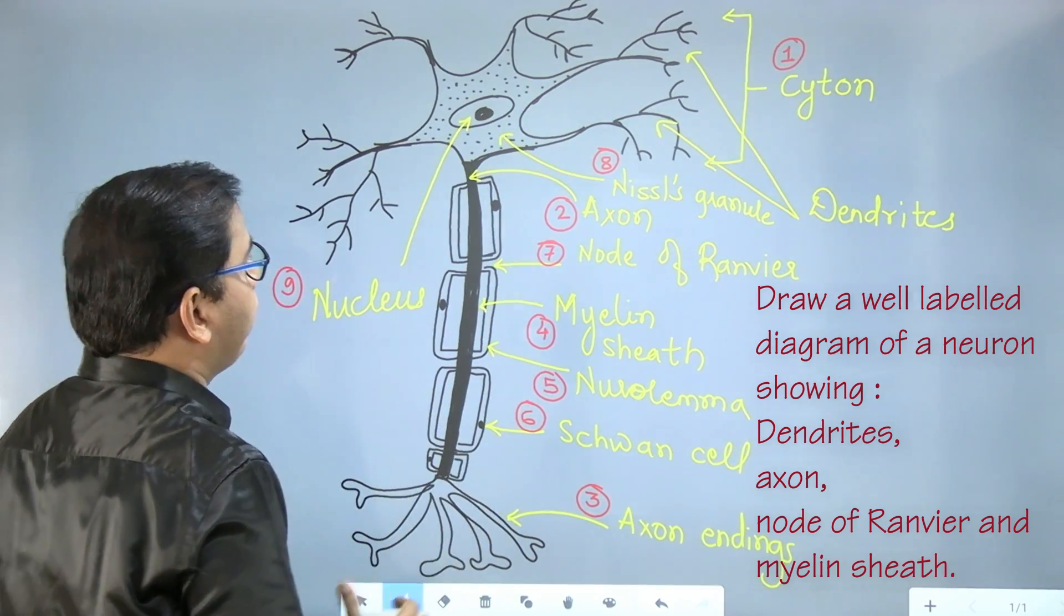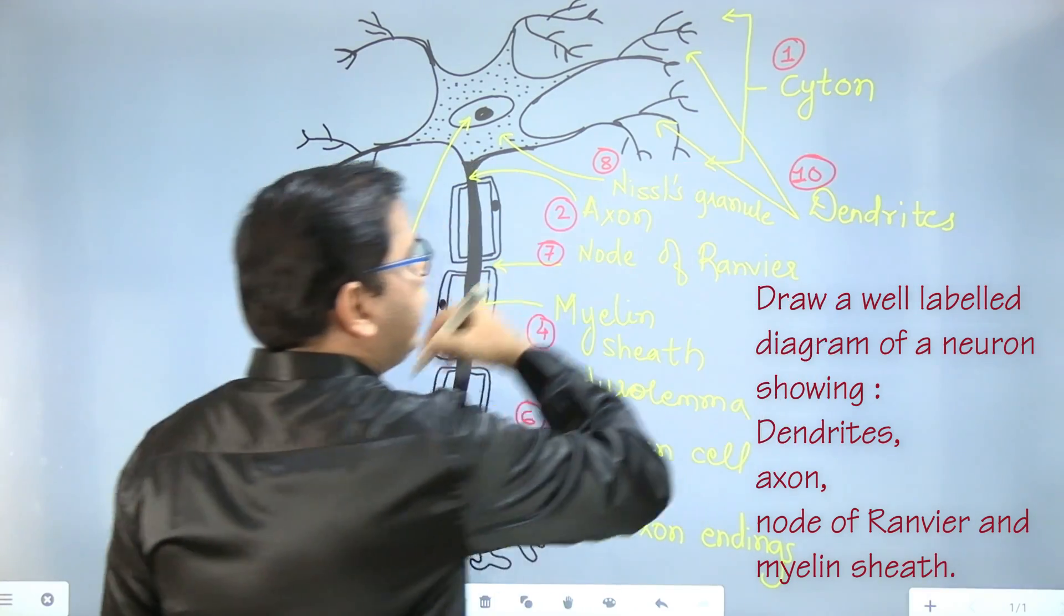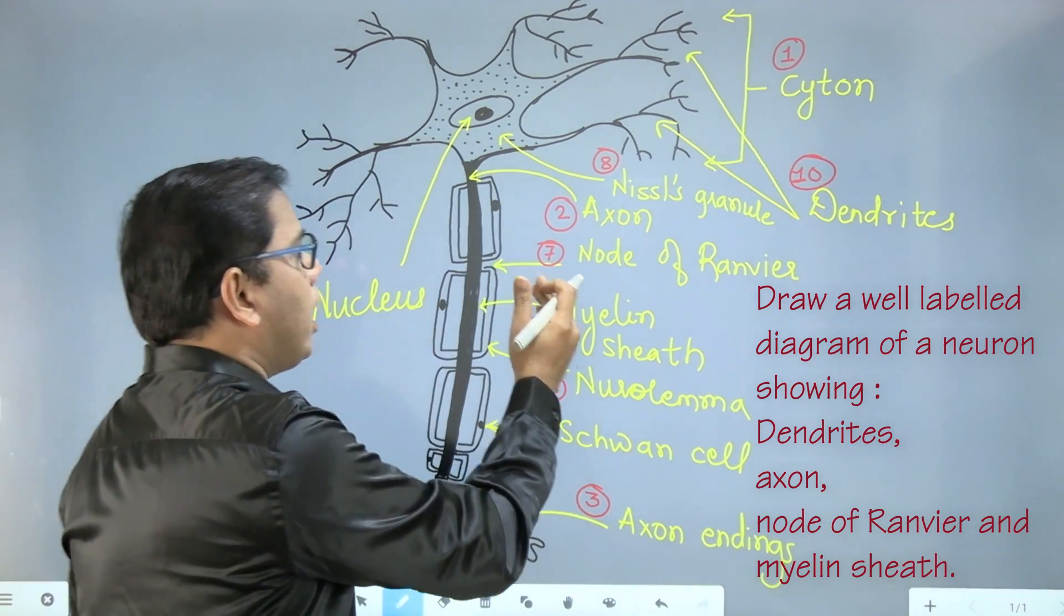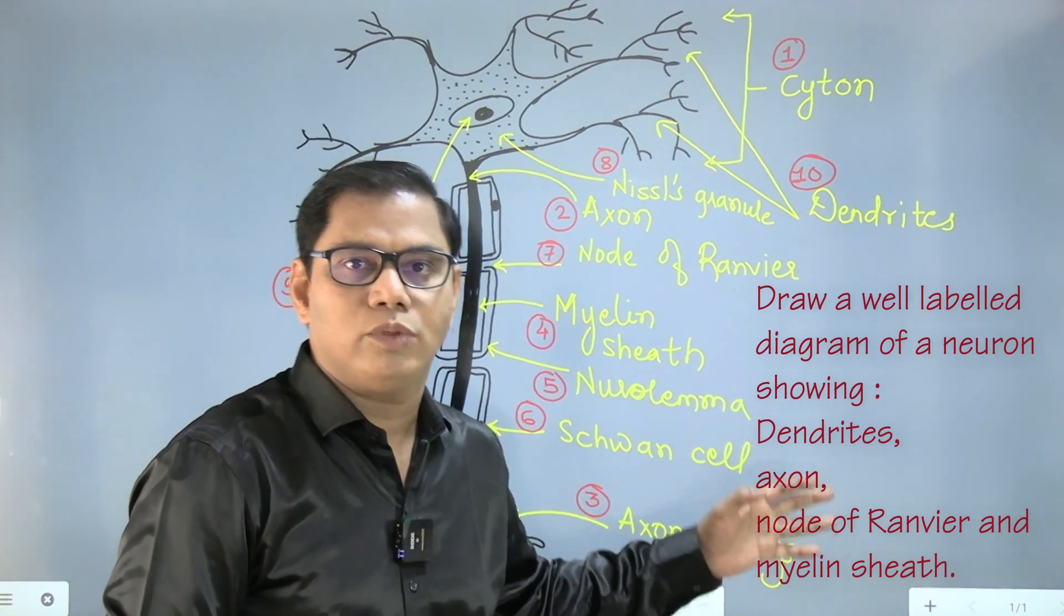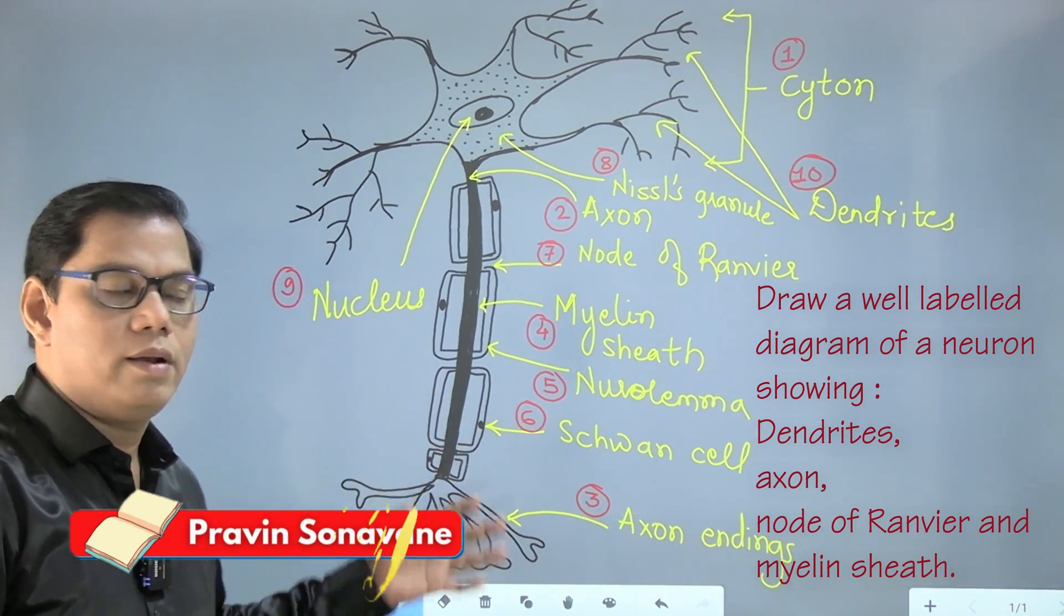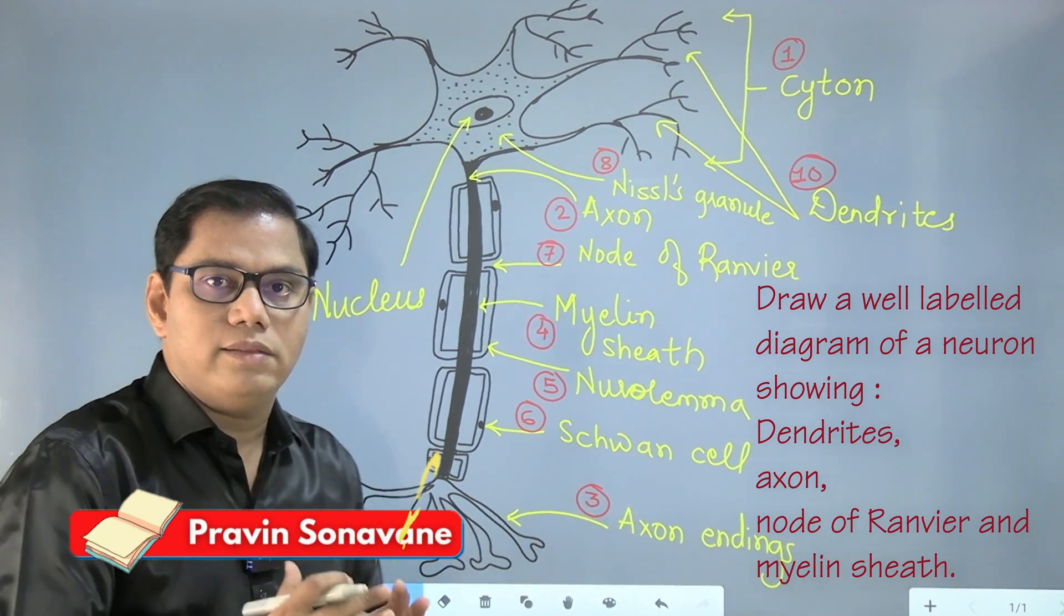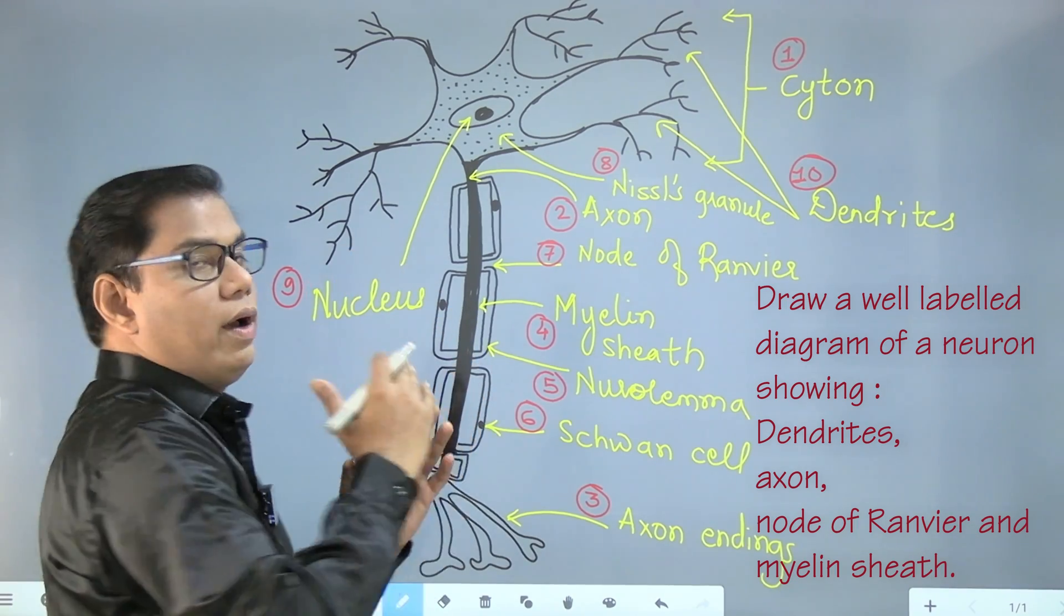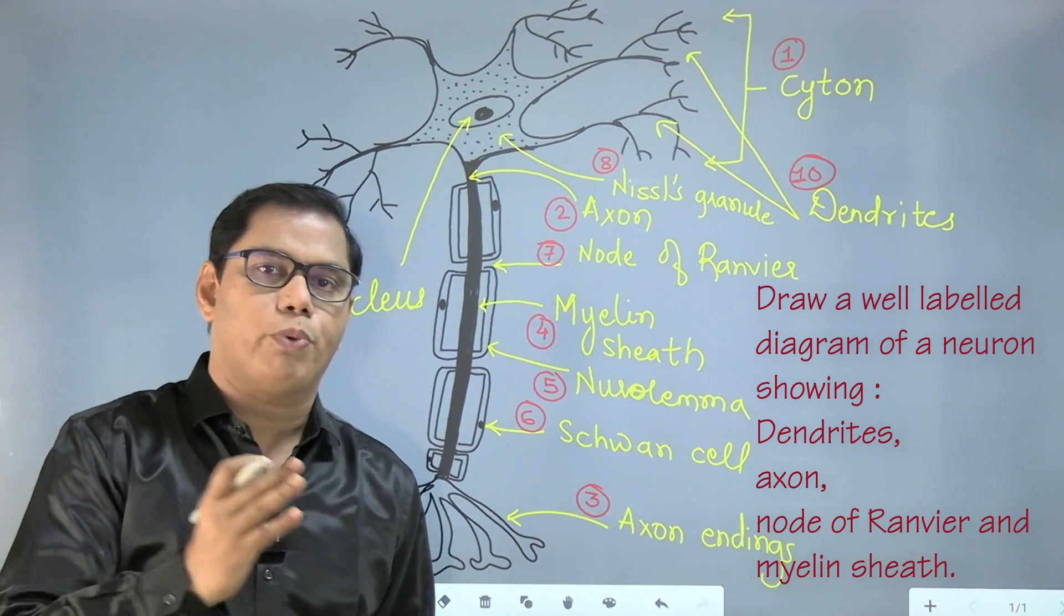And these are important nine parts. Not nine, the tenth one. How can we forget dendrites? In an examination, they can ask you to draw a diagram and label the parts. They will give you any four names out of these ten names and you have to label these four names only. But we have covered everything over here. I feel that this year a diagram will be asked either of neuron or a Malpighian body.